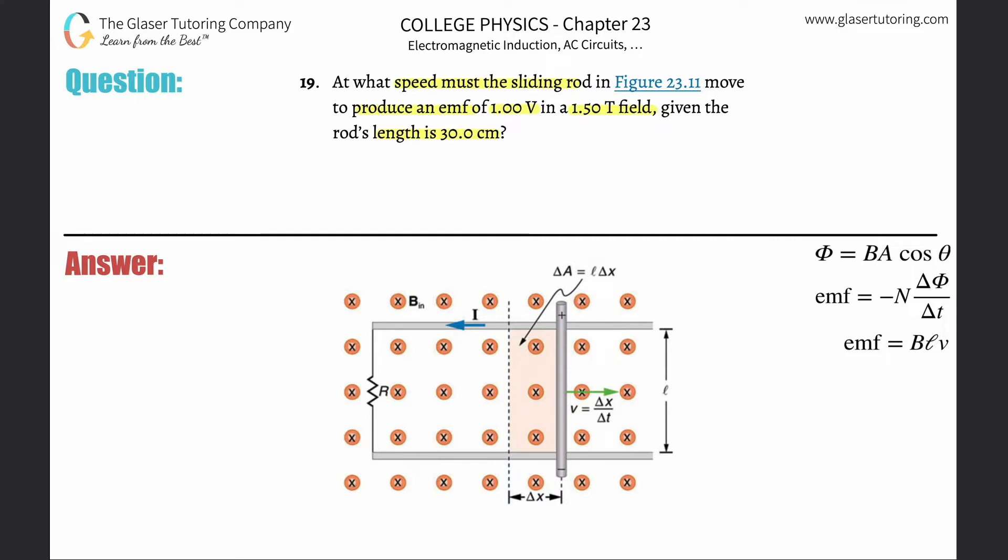All we need to do here is we need to realize that we have an induced EMF of 1 volt. The external field is 1.5 tesla and the rod's length is 30 centimeters and what we can do is we can use this formula then to find the speed that the induced EMF is going to be equal to the external magnetic field multiplied by the length of the rod that's moving in that field multiplied by the velocity.